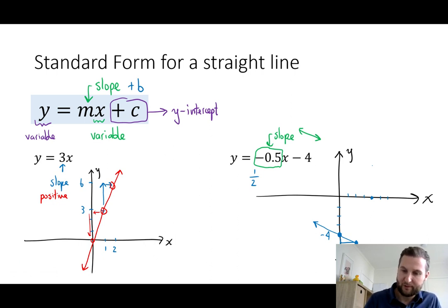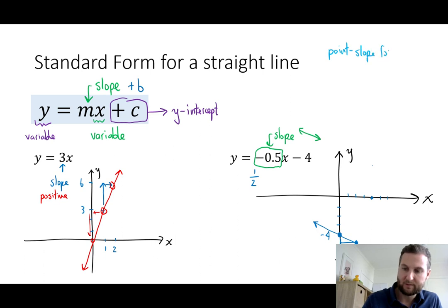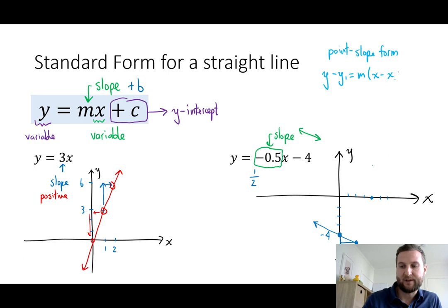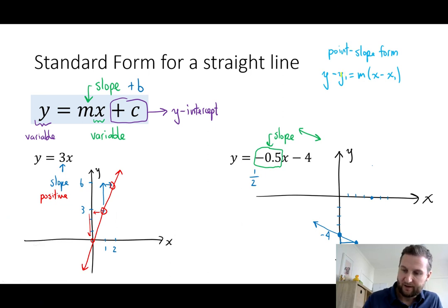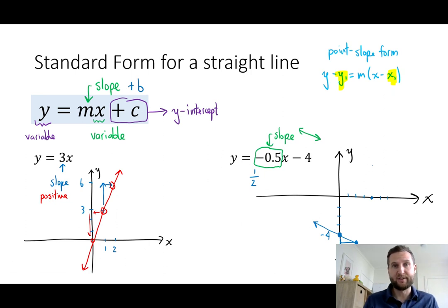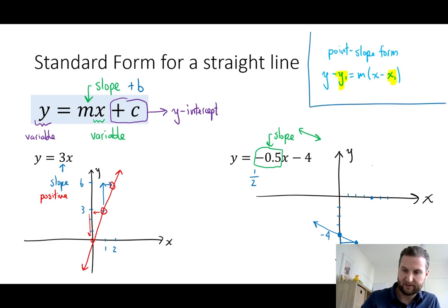There's another form called the point-slope form, which says y minus y1 equals m times x minus x1. You'll recognize the slope there as m, and then your point is (x1, y1). Given any point you can use that information to determine the equation of the line, but we'll come back to this in the future — that is an aside.